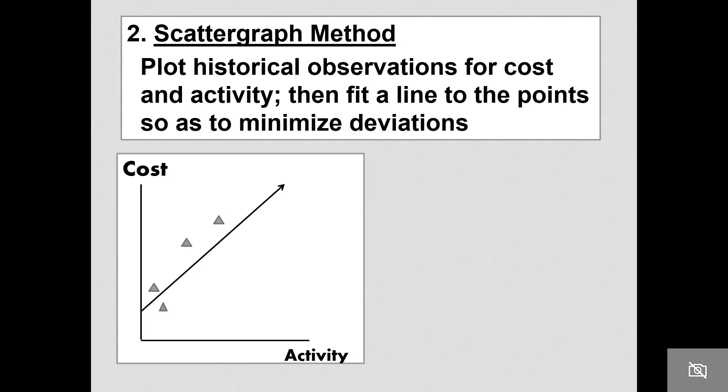If we had cost on the vertical axis and activity on the horizontal axis, and we plotted these four data points, we could minimize the deviations with a line that looks something like this.